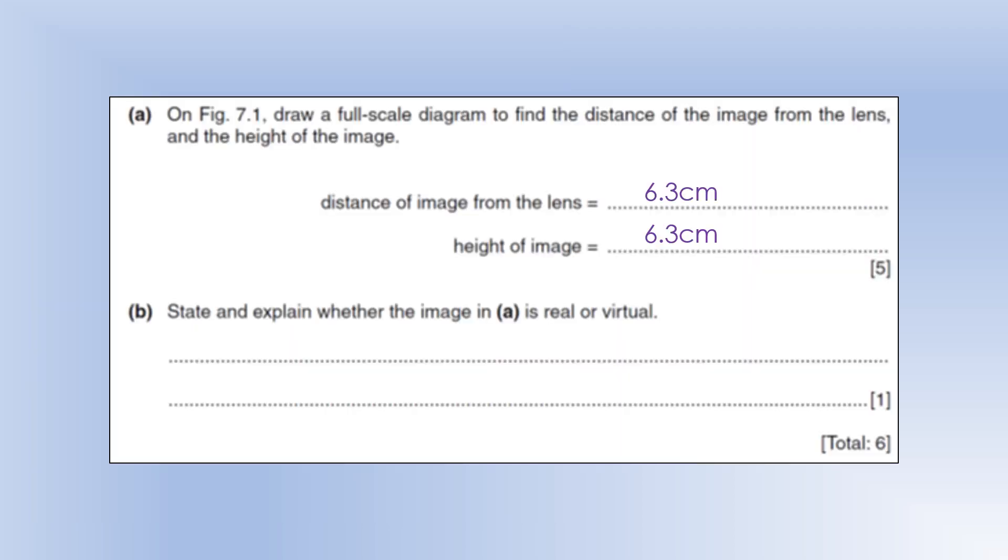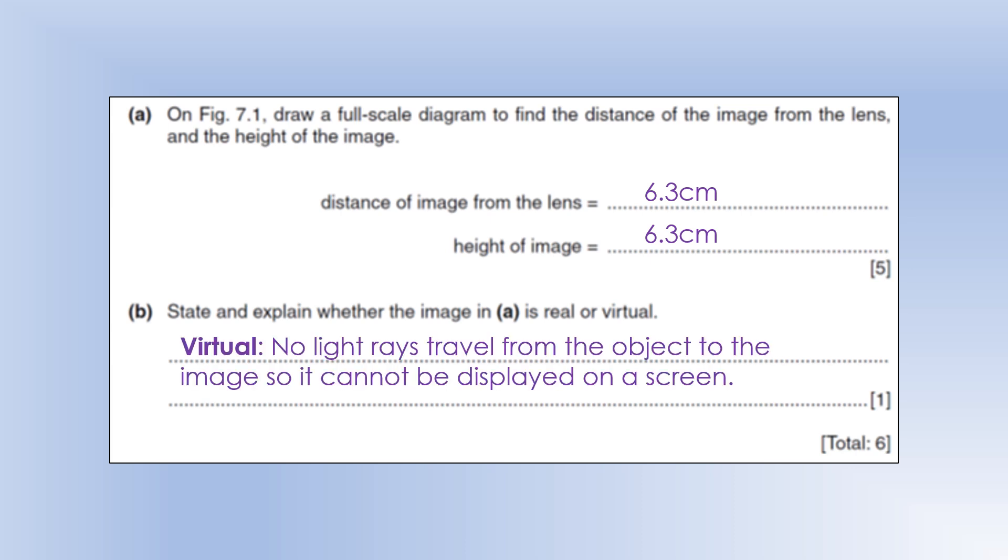So it says state and explain whether the image is real or virtual. It's a virtual image because no light rays actually go from the object to the image. And what that means is we cannot display it on a screen, so there is actually no image or light rays going through where the image is. It's just a trick of our brain, which is how a magnifying glass essentially works, by tricking our brain.